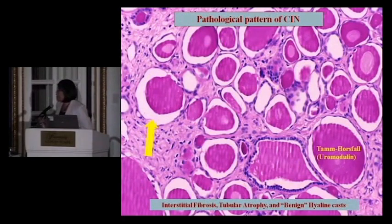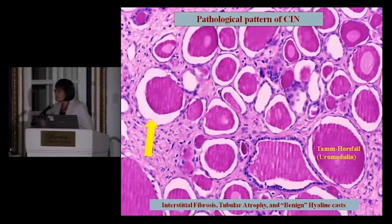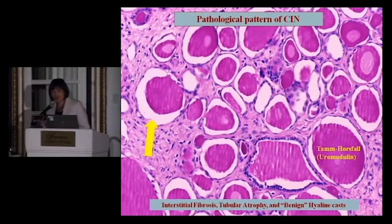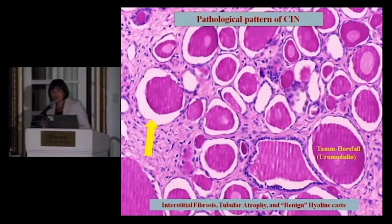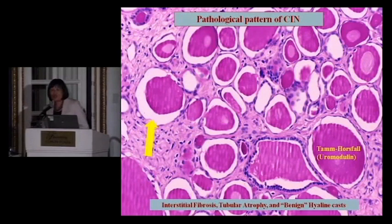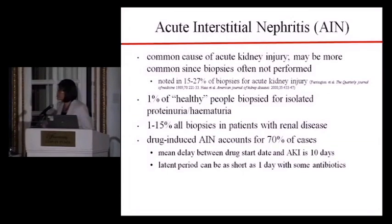This is a phenomenon called thyroidization. Thyroidization is comprised of tubules filled with eosinophilic proteinaceous material, and the interstitium is filled with collagen deposit, with few inflammatory cells. In addition, the tubular epithelium is flattened, indicating tubular atrophy. This is a chronic, fibrosis pattern.